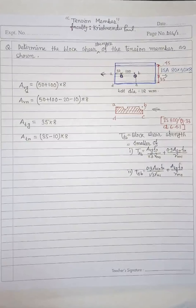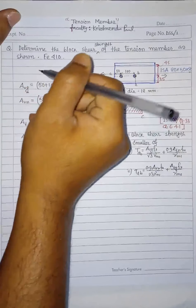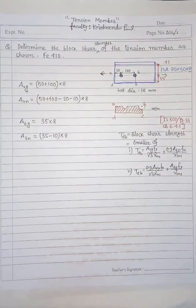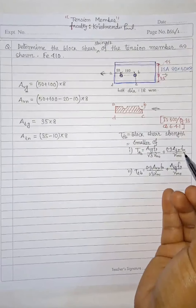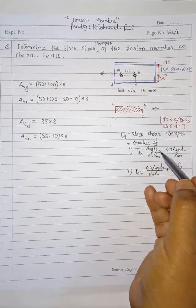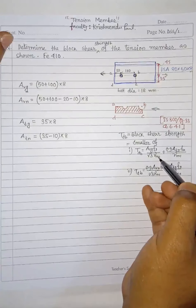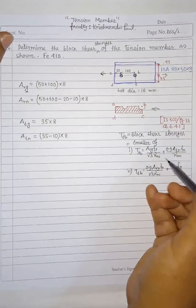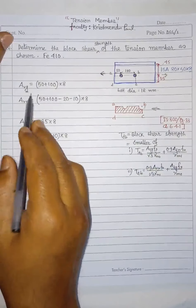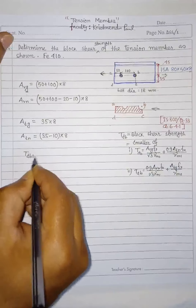The steel grade is Fe410, so fy = 250 MPa and fu = 410 MPa. The bolt grade is 4.6. The partial safety factor for yield strength is γm0 = 1.10, and for ultimate strength γm1 = 1.25. Now substituting these values into the two equations to find Tdb1 and Tdb2.